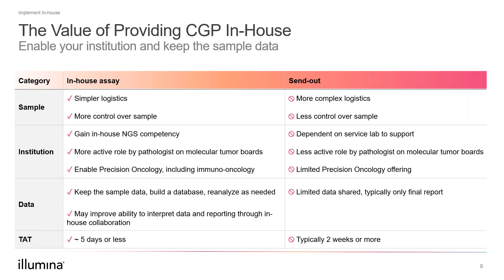The last thing we want to talk about is why you would want to bring an assay like this in-house. One of the most important reasons is that you control the turnaround times related to a sample instead of being at the mercy of a send-out lab. A turnaround time of about five days is very achievable for comprehensive genomic profiling, versus send-outs that can keep you waiting for sometimes weeks. The second advantage is that you have complete control over the handling of the sample, with less risk of issues with transport to send-out facilities.